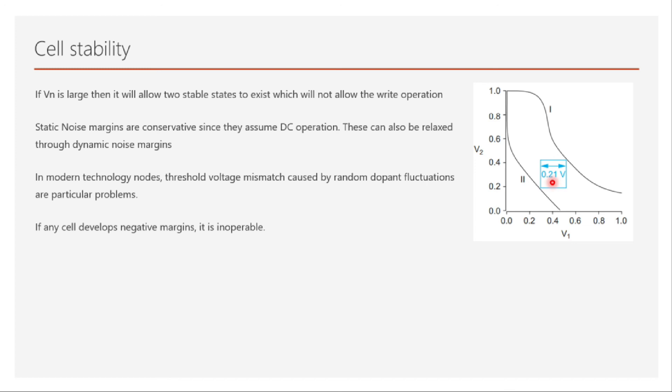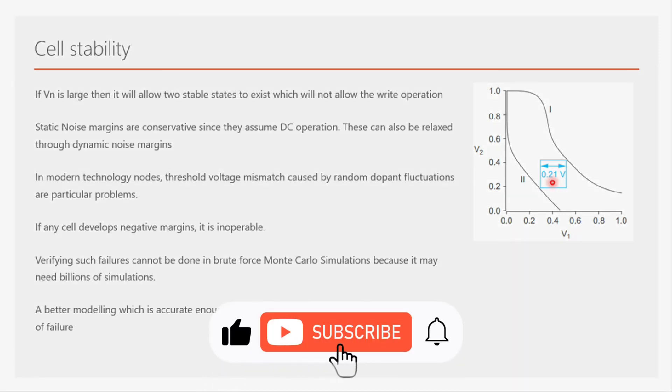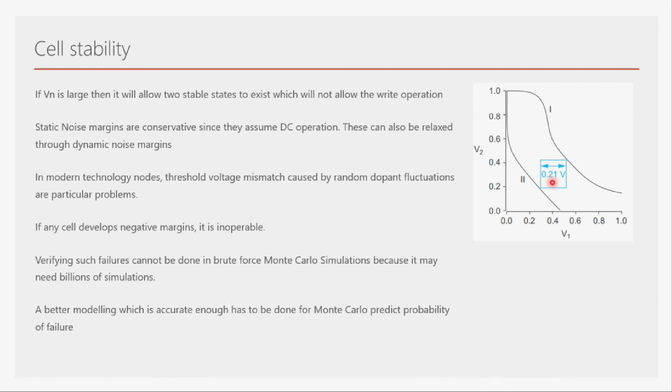These process variation failures cannot be verified by brute-force Monte Carlo simulation because it may need billions of simulations. Instead, a well-thought Monte Carlo simulation must be done that also accurately predicts the probability of failure. That covers cell stability — a somewhat advanced concept — and its importance for SRAM cell design.